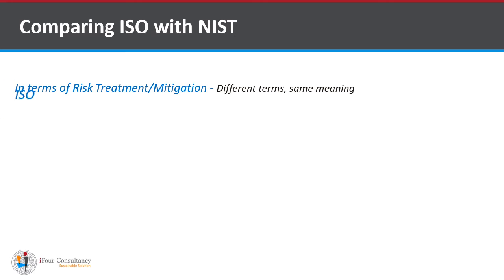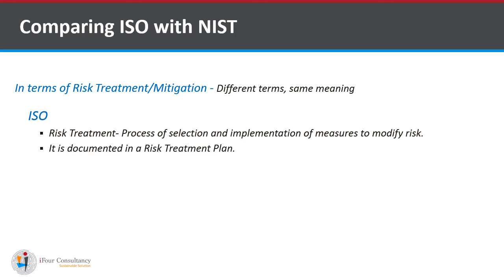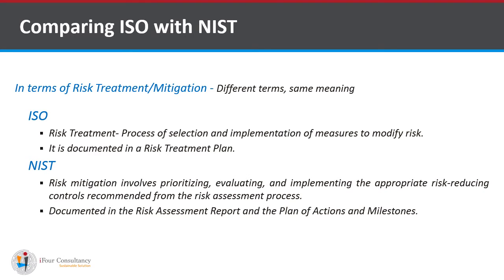Comparing ISO with NIST in terms of risk treatment and risk mitigation — different terms, same meaning. ISO refers to risk treatment, defined as the process of selection and implementation of measures to modify risk, documented in a risk treatment plan. NIST uses the term risk mitigation, which involves prioritizing, evaluating, and implementing the appropriate risk-reducing controls recommended from the risk assessment process, documented in the risk assessment report and the plan of actions and milestones.